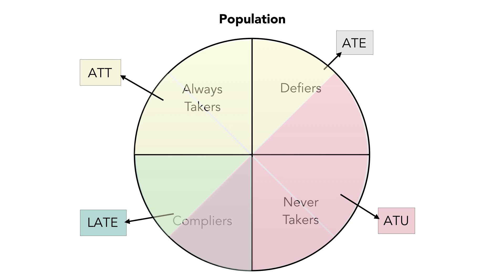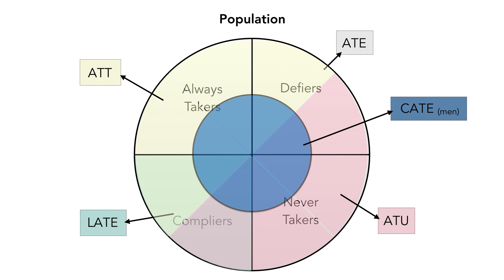Finally, let's consider the conditional average treatment effect for men. Not only can we partition our population according to whether people are treated or not, or whether they're a complier, always taker, defier, or never taker, but we can also split people up into men and women. In this final circle, we've got men on the inside and women on the outside. The conditional average treatment effect for men is the average of everybody inside the circle, and the conditional average treatment effect for women is the average of everybody outside the circle. Some men will be defiers, always takers, compliers, and never takers — and likewise for women. Some men will be treated and some won't; some women will be treated and some won't.